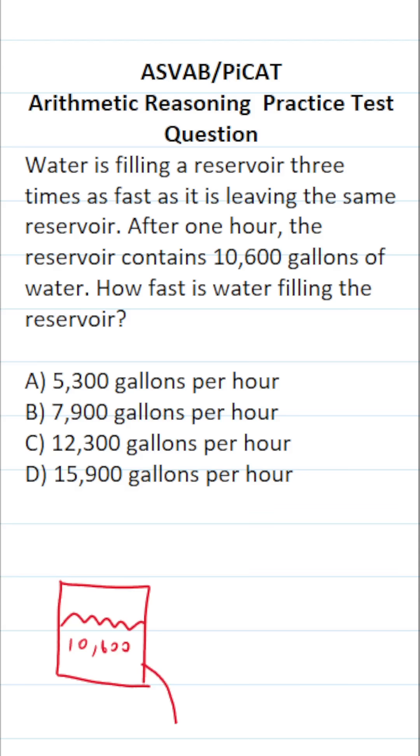According to the problem, we know water is leaving the reservoir and water is filling the reservoir at the same time. That said, we don't know the rate at which water is filling or leaving the reservoir. So here's what I'm going to do: I'm going to translate these statements into an equation that we can then solve.